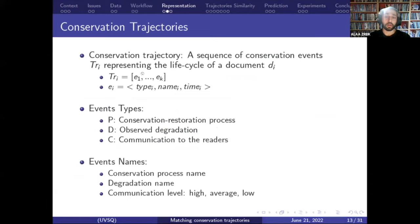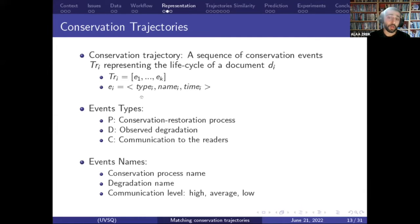Using the implemented database, we introduced a representation of the life cycle of documents by its sequence of conservation events called the conservation trajectory. Each document DI is represented by a trajectory TRI, where TRI is a sequence of events EI to EK, and each event is a triple formed as type, name, and time. The type can be P for a conservation restoration process, D for a degradation, or C for a communication by the readers. The name can be the name of the conservation process, the name of the degradation, or the level of communication — high, average, or low — depending on the number of requests to that document.